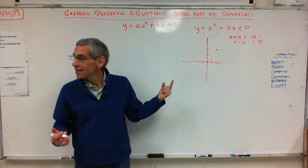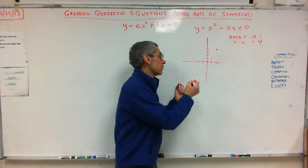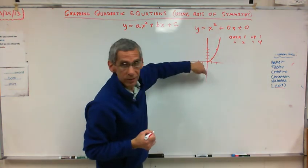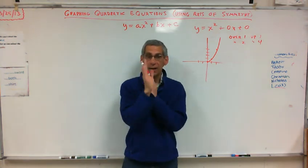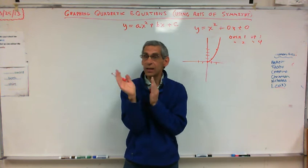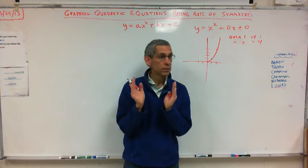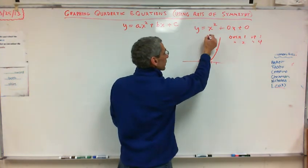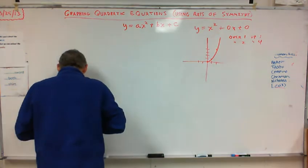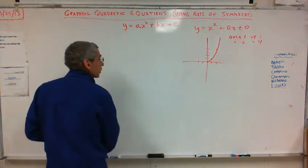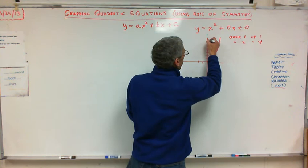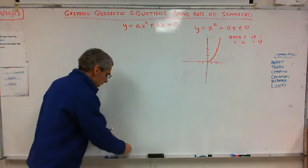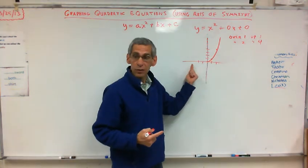But notice, this is only half of my parabola, right? This y-axis in this particular case is my axis of symmetry. It's that line that the parabola is equidistant to. Do you know what equidistant means? Equidistant. Equal distance. Right?